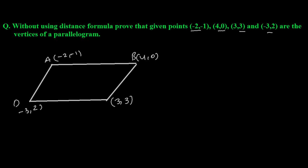Now, if this quadrilateral is a parallelogram, then it must satisfy that opposite sides are parallel. If the opposite sides are parallel, then we can say this is not a simple quadrilateral — it is a parallelogram. So to prove this, we need to show that AB and CD are parallel, and similarly AD and BC are parallel.